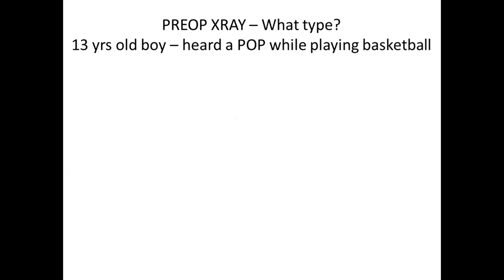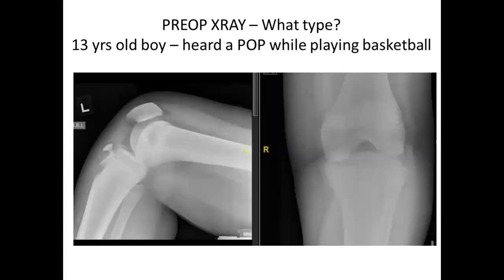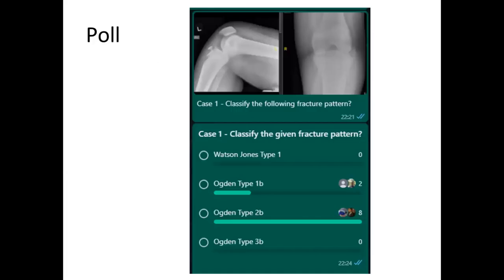Moving to the next case: a 13-year-old boy heard a pop while playing basketball when landing from a jump. This looks like a comminuted tibial tuberosity fracture not going into the epiphysis, possibly Type 1B or 2B, which was what most respondents thought on the pre-session poll. But there was a surprise once the case was opened.